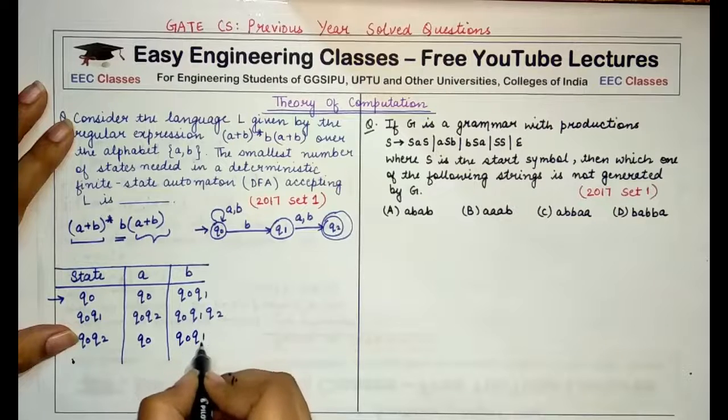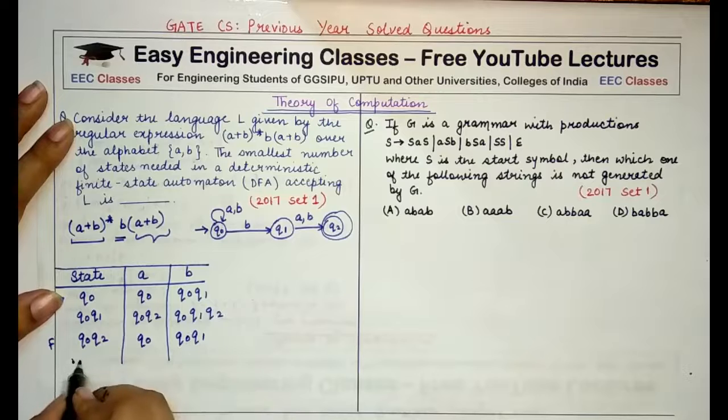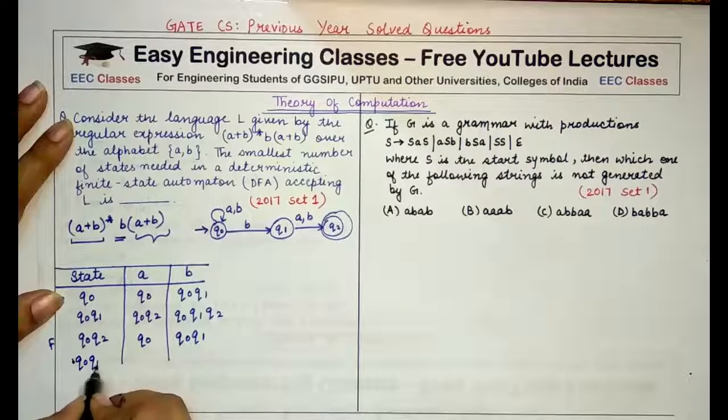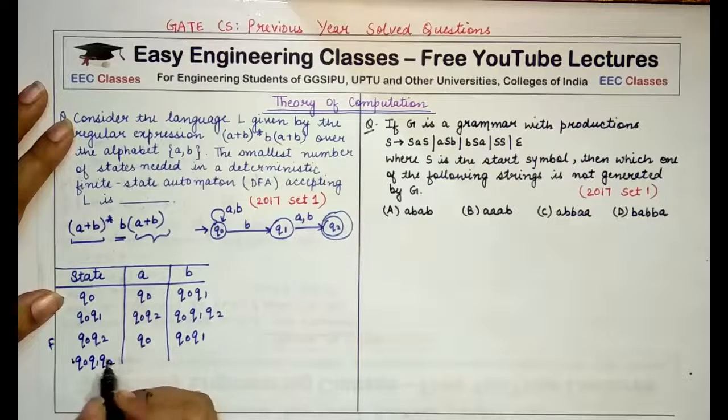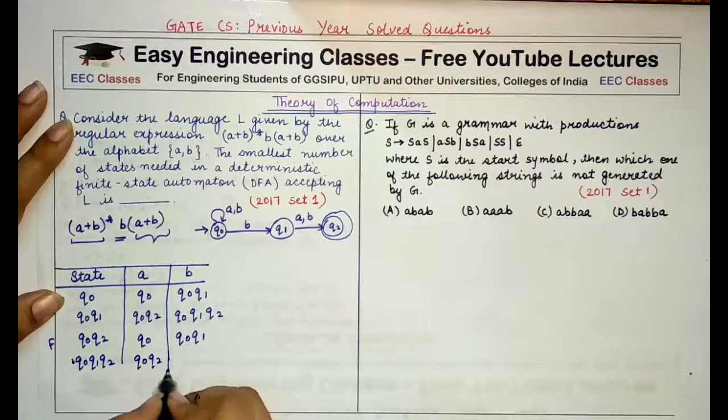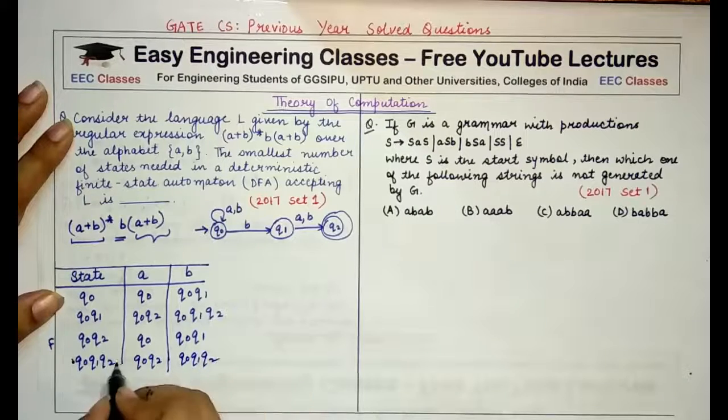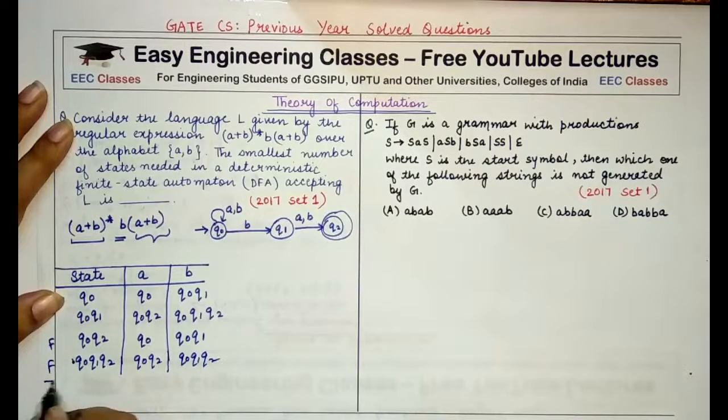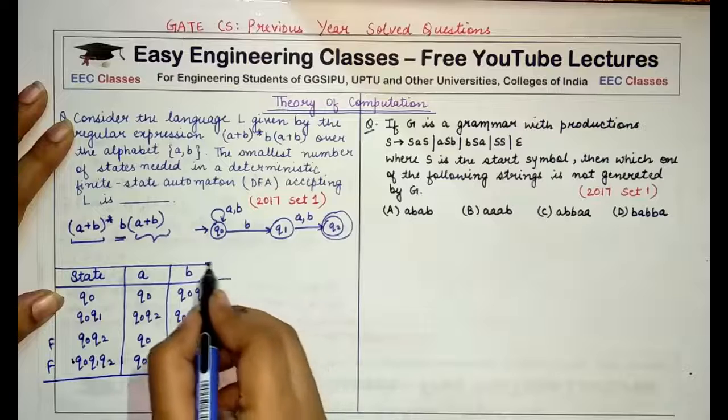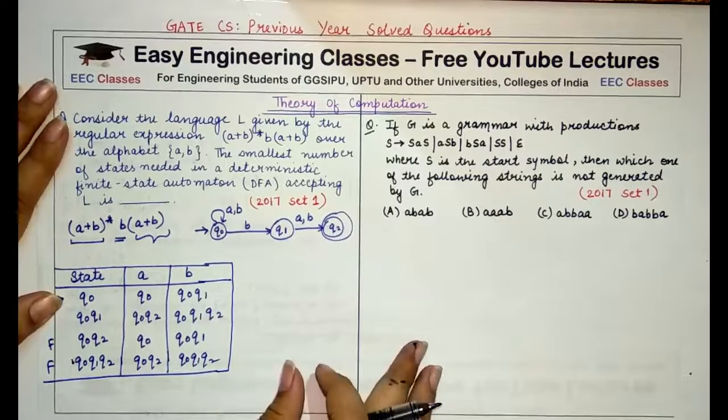Coming to the next state {q0,q1,q2}, reading a I would go to {q0,q2} and reading b I would go to {q0,q1,q2}. So this will also be a final state.